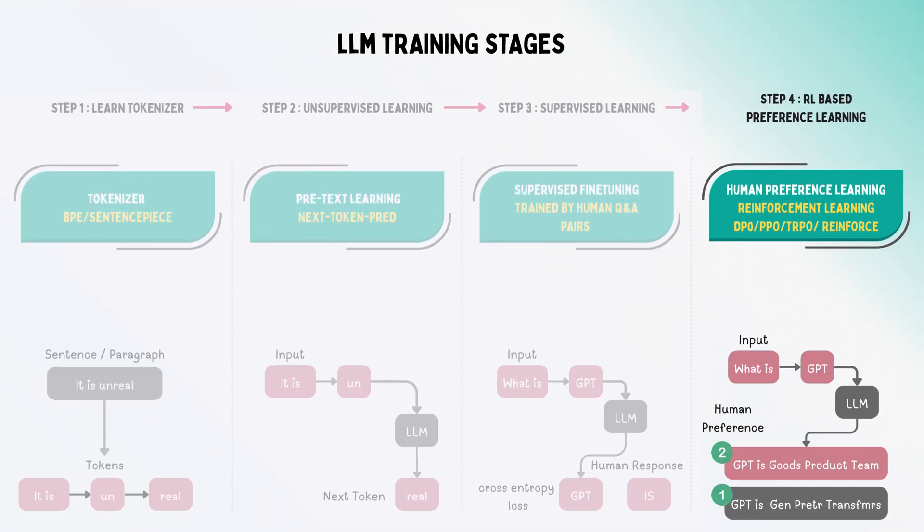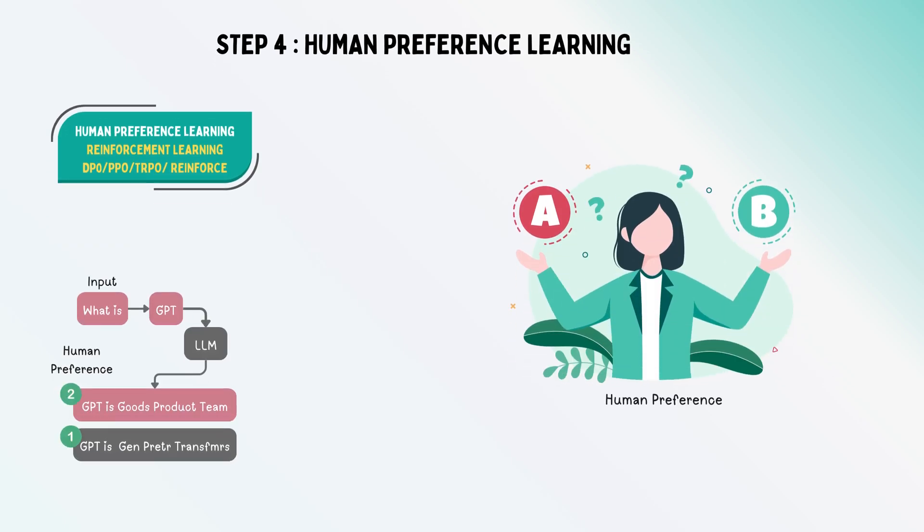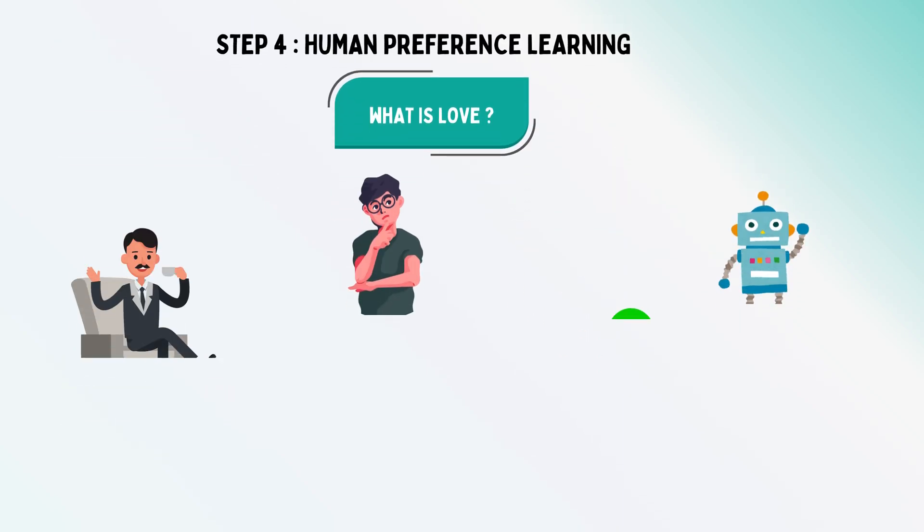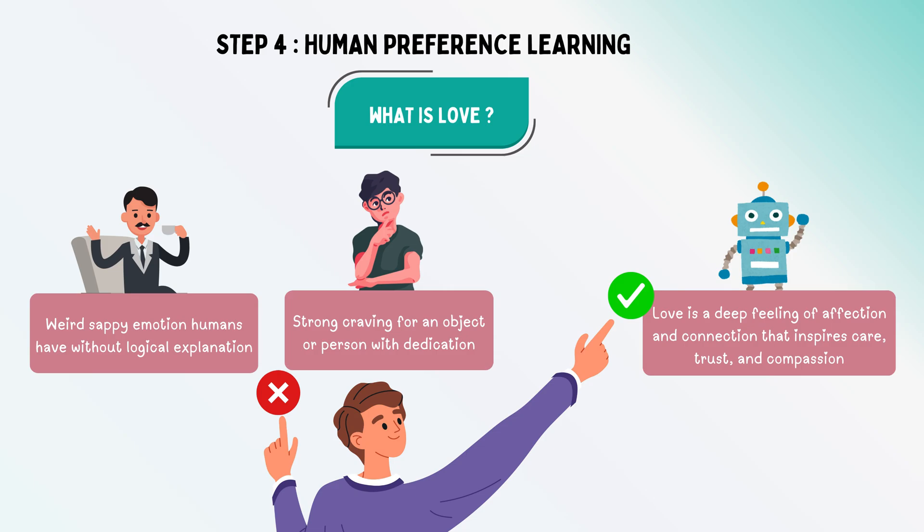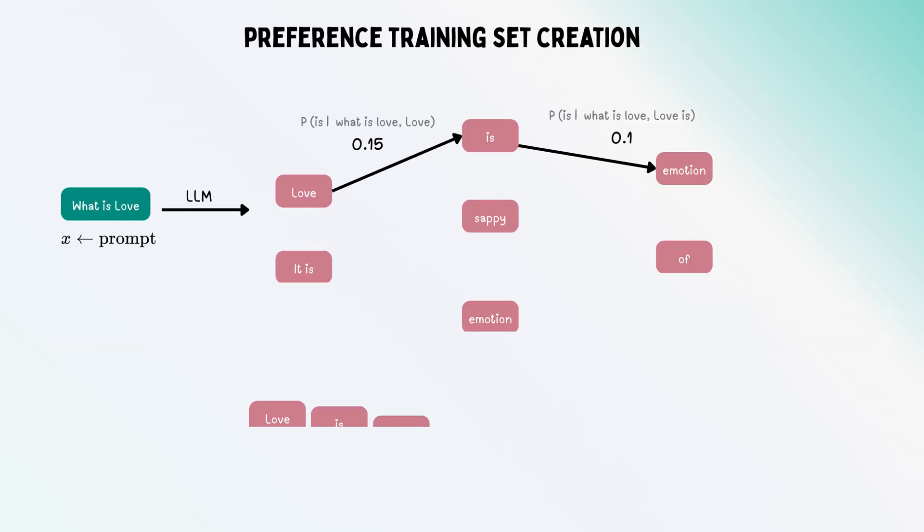If an LLM can have five possible responses, humans might have preferences toward certain words, a polite tone, or things like this. This is what human preference learning allows. First, understand that LLMs need not give just one kind of response.